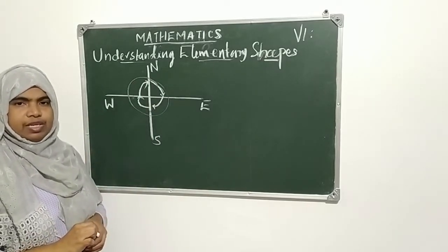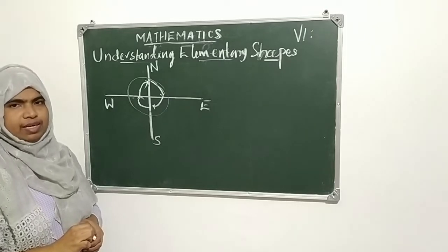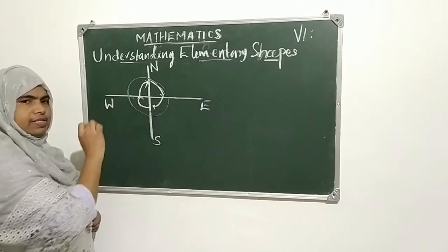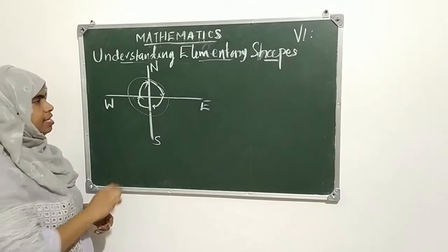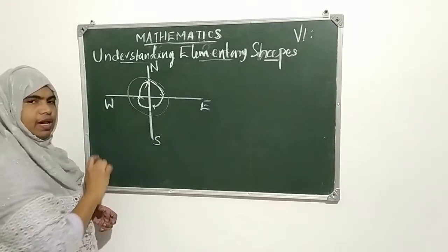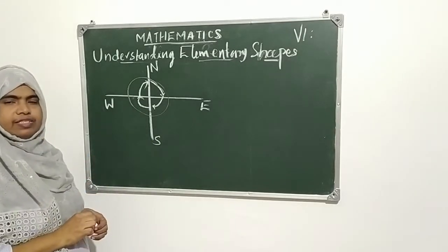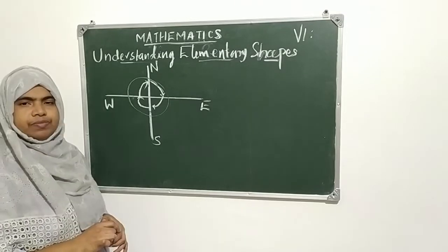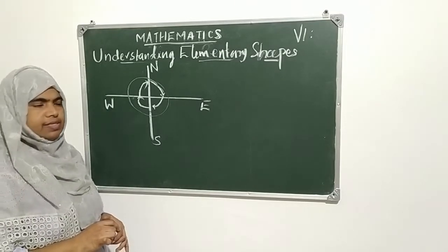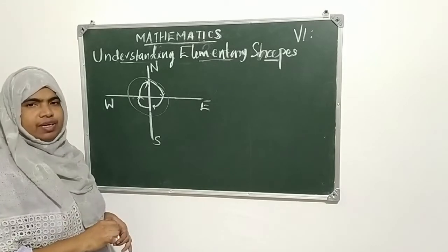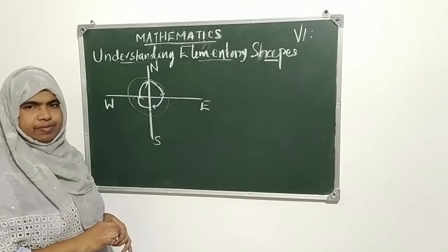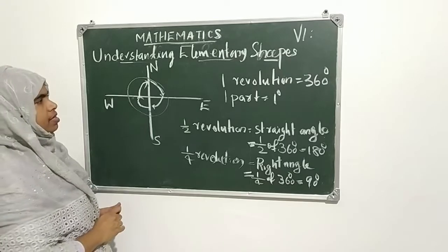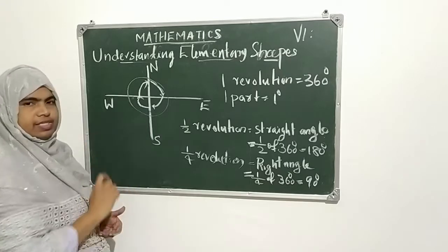One revolution equals 360 degrees. Each part equals 1 degree. That is the measure of angle — angles are measured in degrees.